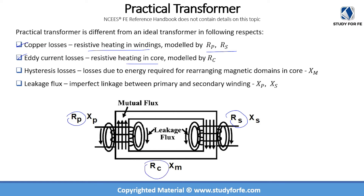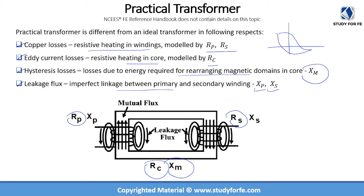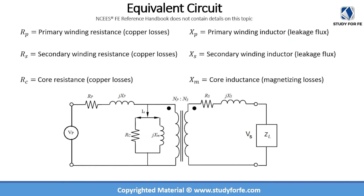We also have hysteresis loss, which is the energy required for rearranging magnetic domains — the magnetic dipoles must be rearranged every time the AC current changes direction, and this is modeled by X_m, the inductive magnetizing reactance. Finally, leakage flux represents imperfect magnetic linking between primary and secondary windings, and is modeled as X_p and X_s on the primary and secondary respectively.